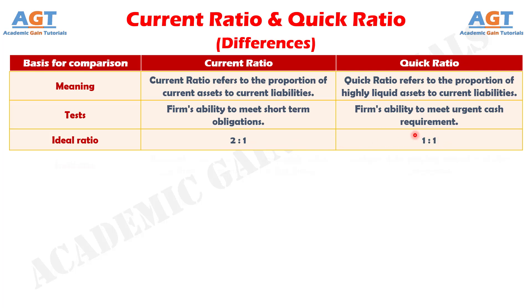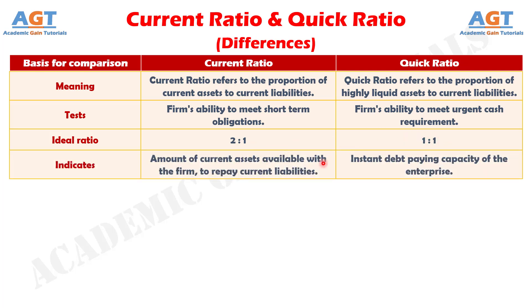Difference number four: the current ratio reflects the company's efficiency in generating sufficient funds to repay its short-term commitments. On the other hand, the quick ratio is an indicator of the company's instant debt-paying capacity.